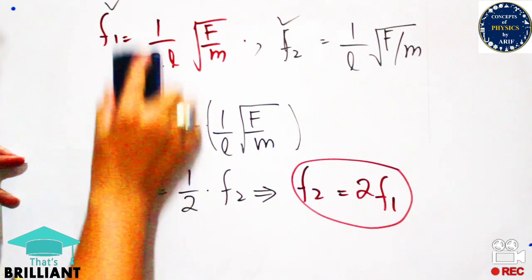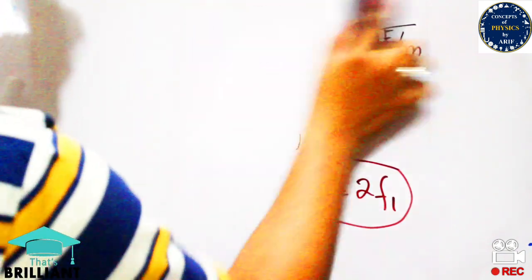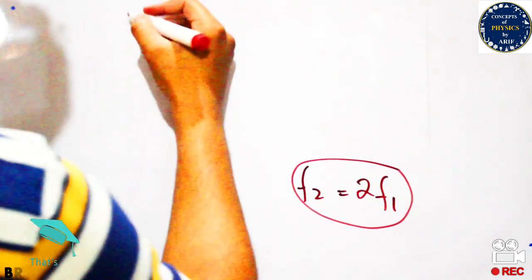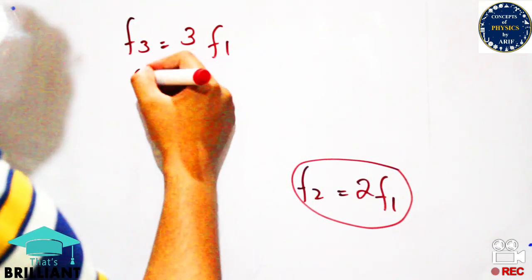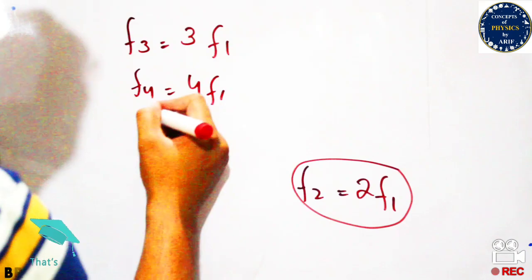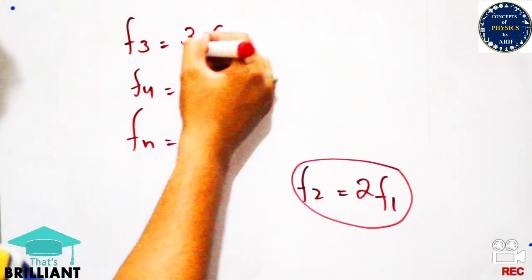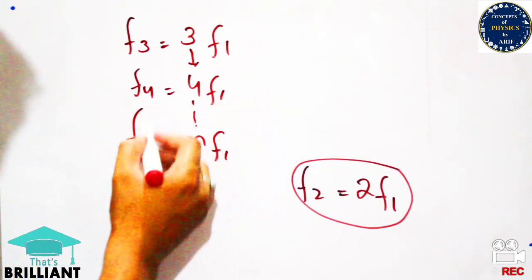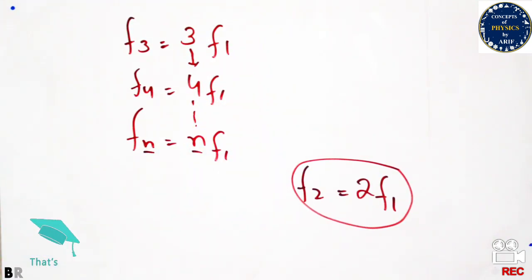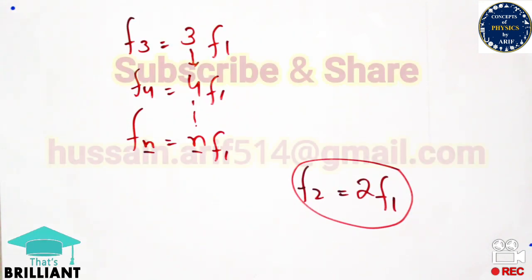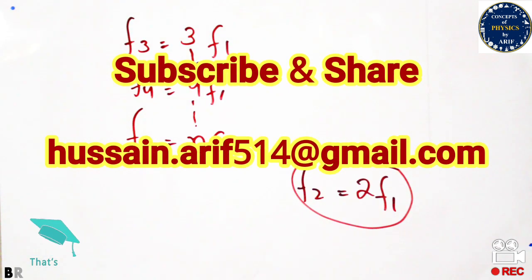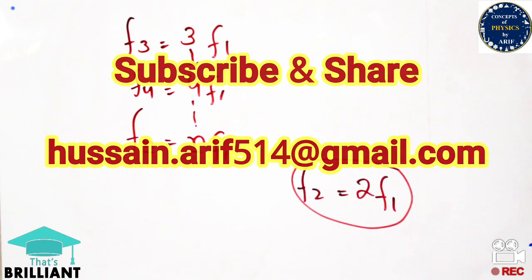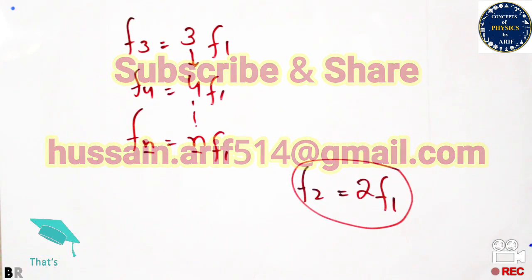The two-loop frequency is double the single-loop (primary resonant) frequency. Extending this pattern: f₃ equals 3 times f₁, f₄ equals 4 times f₁, and in general fₙ equals n times f₁ for an n-loop wave. This is the final expression for stationary waves in a stretched string. If you have any questions, contact me at the email shown. Please comment and subscribe — see you soon!